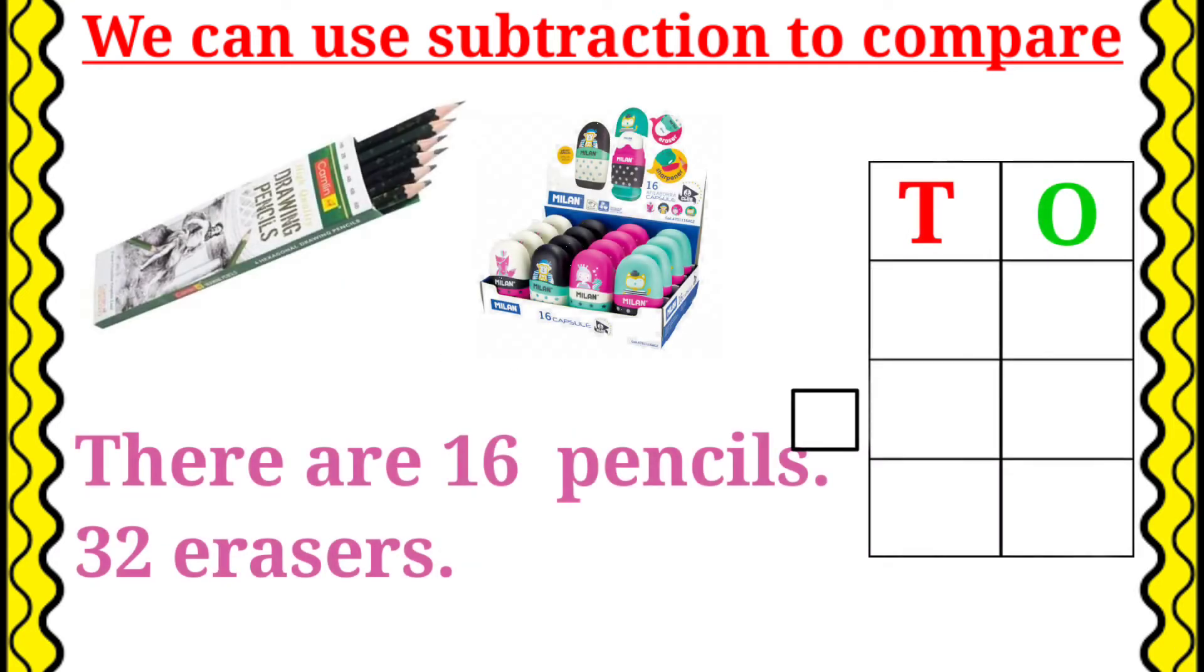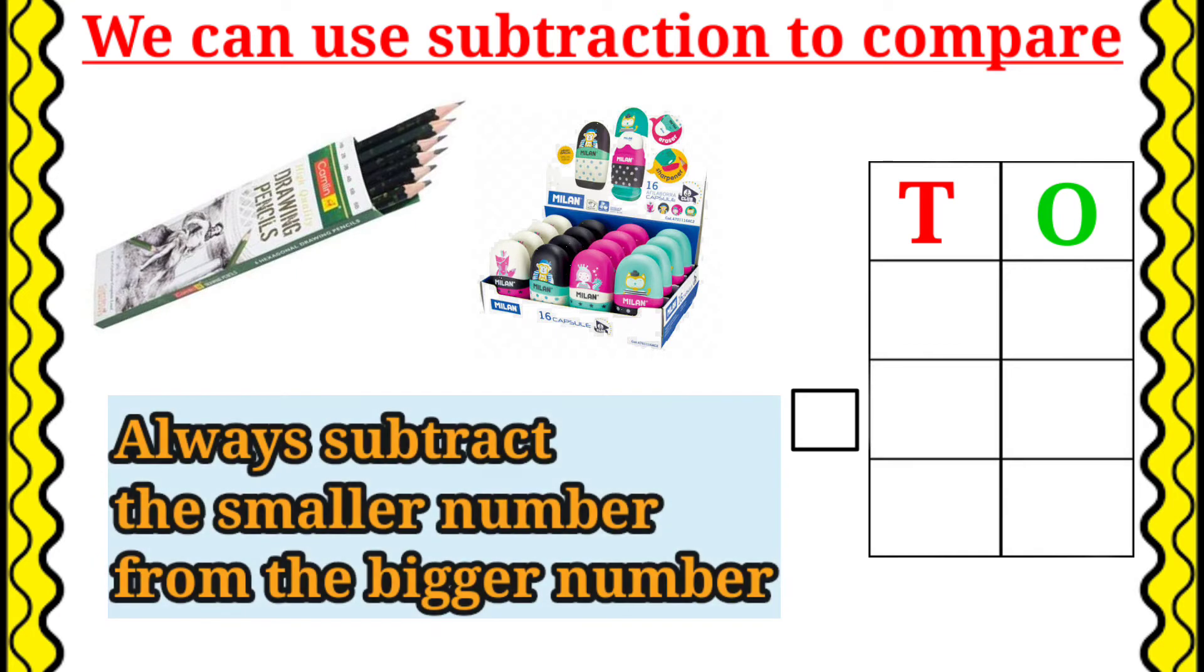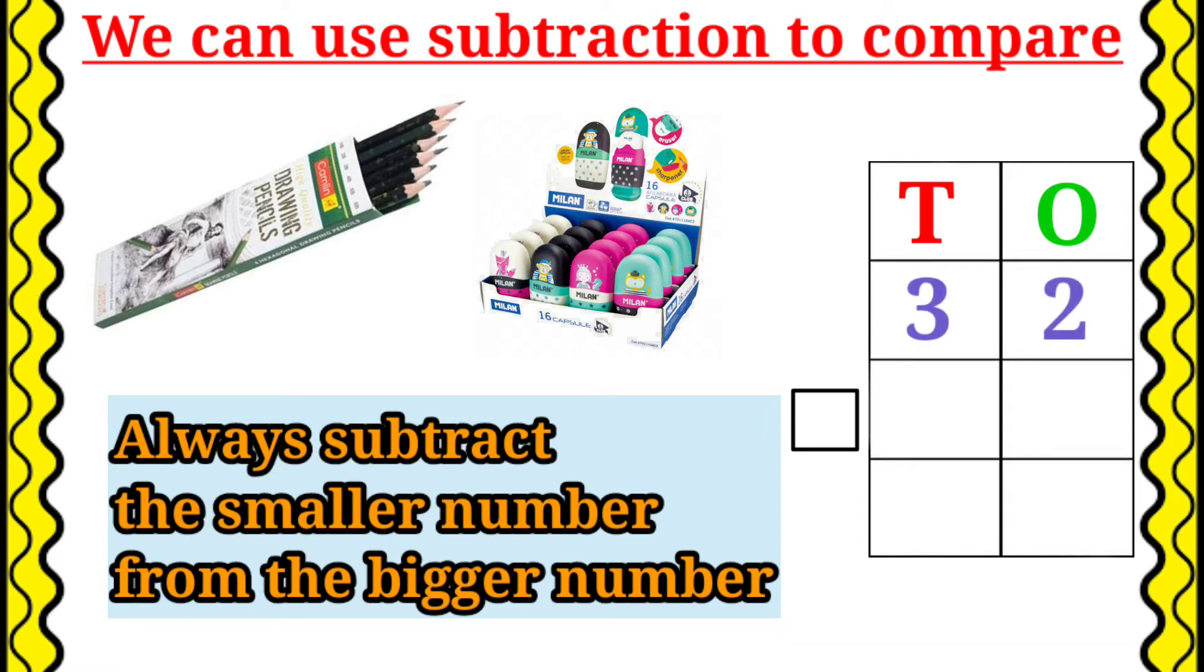There are 16 pencils and 32 erasers. The question is how many less pencils than erasers? We know that always subtract the smaller number from the bigger number. So, first we will write the bigger number 32. Then we will write the smaller number 16.